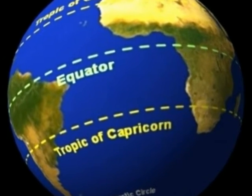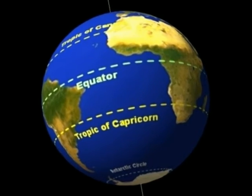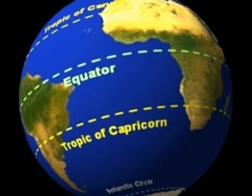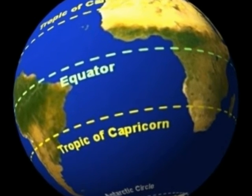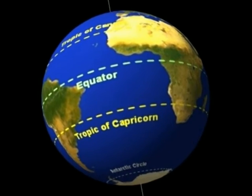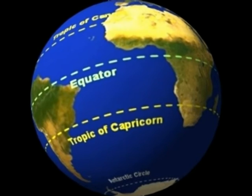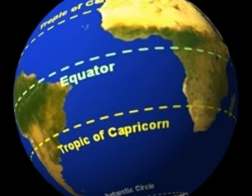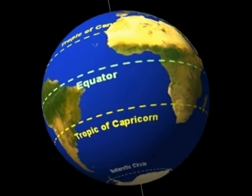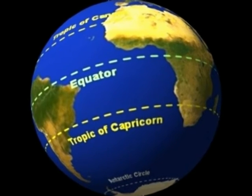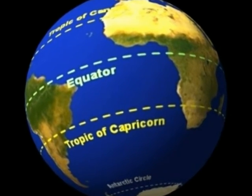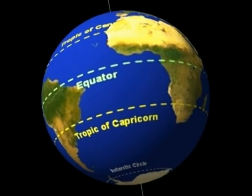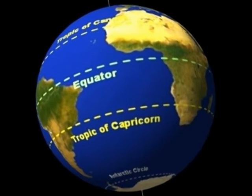Now for the fourth question, and this will be the final question as well. My friend hails from a country which does not share land boundaries with India. Identify the country from among the following options. A. Bhutan, B. Tajikistan, C. Bangladesh, D. Nepal.